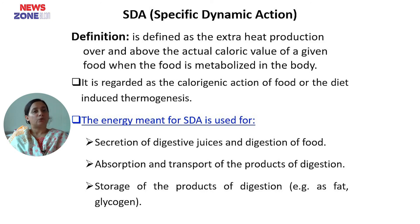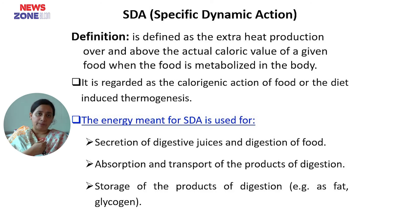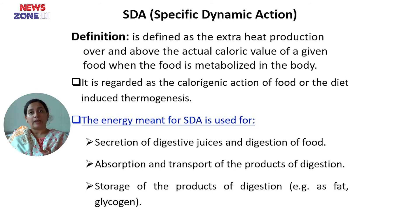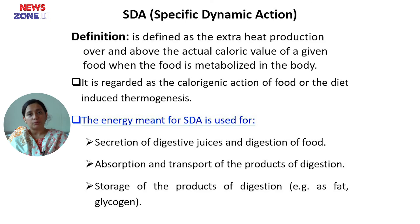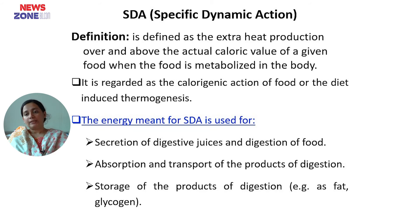When we take in food, there is energy expended on digestive tract movement, peristalsis, secretion of digestive juices, digestion, and absorption. These activities consume energy, which is lost as heat. This is called the thermogenic effect of food, also known as specific dynamic action or diet-induced thermogenesis. It is also regarded as the calorogenic action of food.